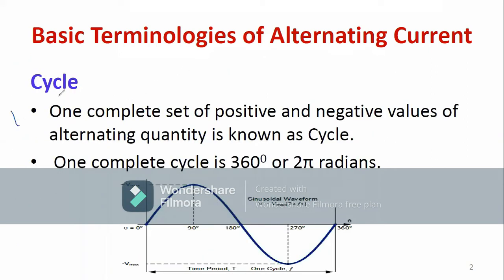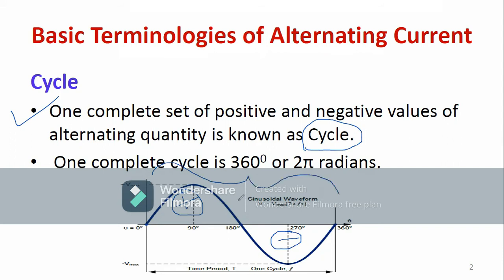What is the definition of cycle? One complete set of positive and negative values of an alternating quantity is known as a cycle. Considering the diagram, one complete set of positive half cycle and the negative half cycle is called a cycle. One complete cycle can be expressed either in terms of degree or radian — either 360 degrees or 2π radians. This is the basic definition of cycle; for an alternating quantity, the cycle is very important.